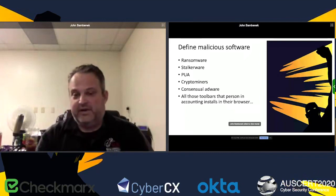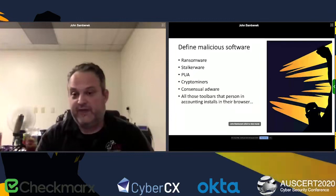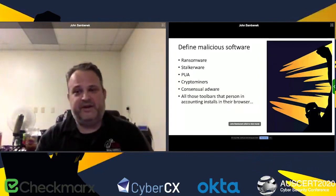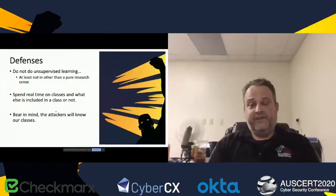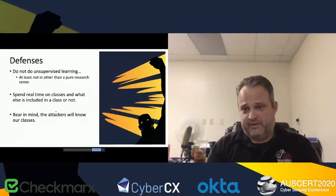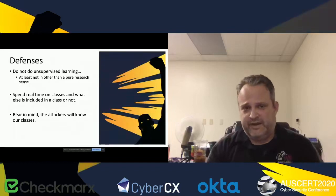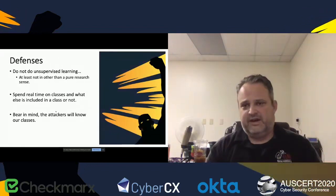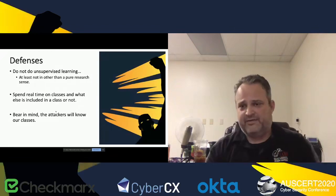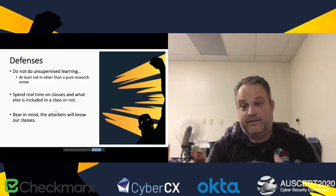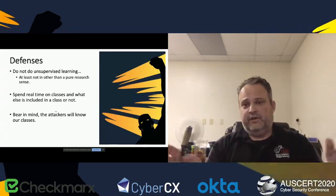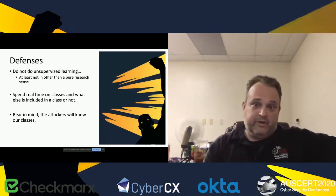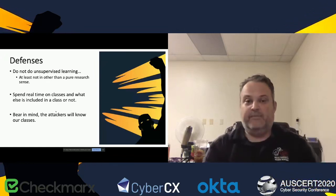Defenses: don't do unsupervised machine learning, and don't use products that do it — at least not in production security contexts. If you're doing exploratory research or hunting for new insights, unsupervised ML is okay. But in the cybersecurity context, you want to use known, classified, and labeled data because of the class confusion problem. If you're doing unsupervised ML on domain names, algorithmically generated domains will cluster together, but there's good and bad within that cluster — and if you act on it, you're going to be making mistakes.